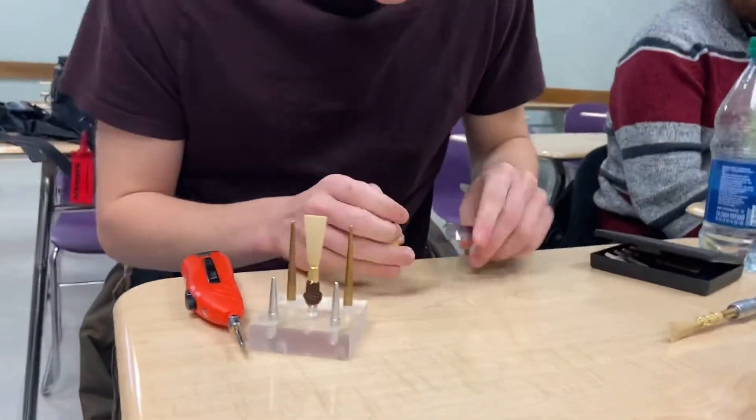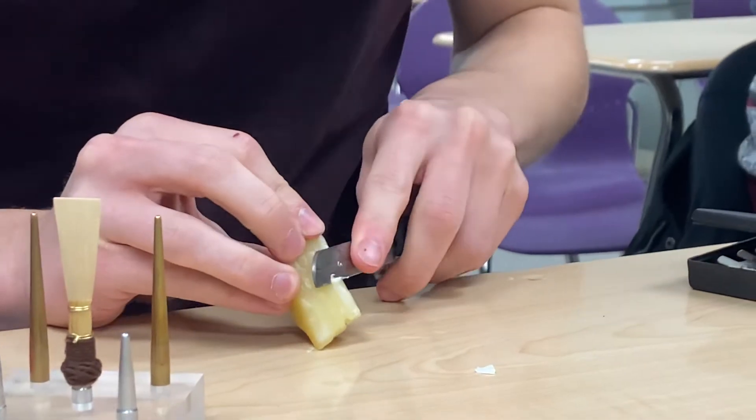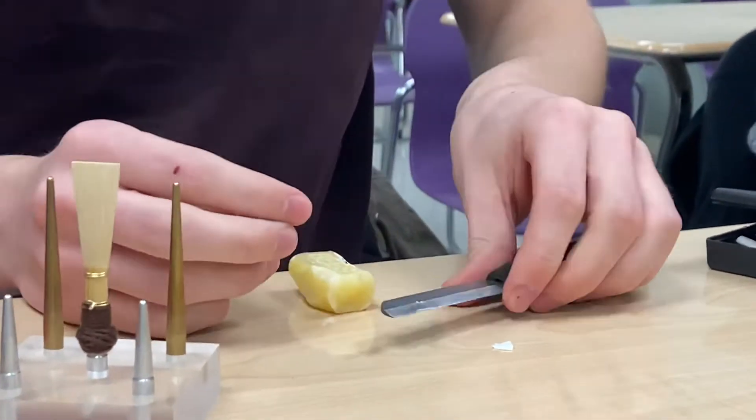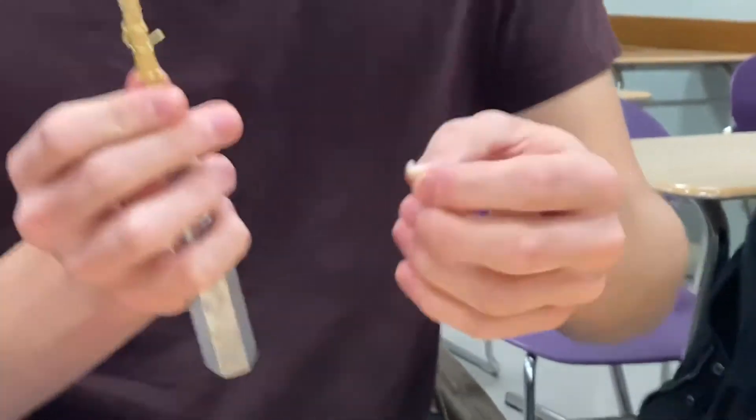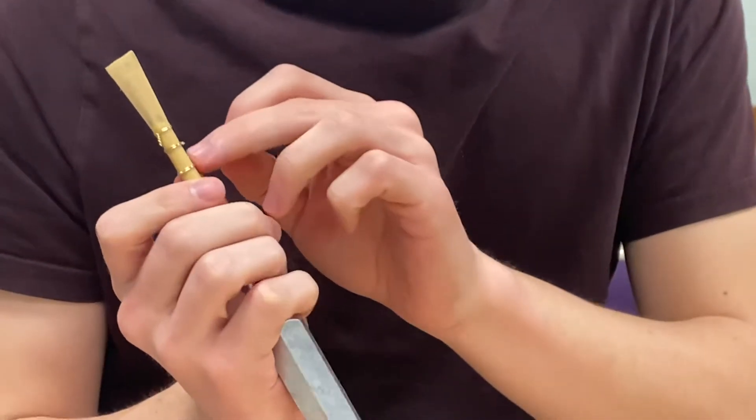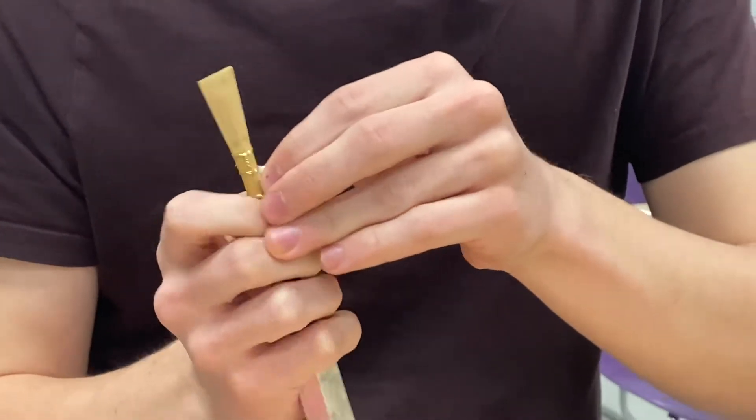I basically cut off two little pieces of beeswax first, like that, just little pieces. And then I take it and stick it right where the two halves of the cane meet. And so I actually got too much, so I'll half it again and I'll put some on the other side.